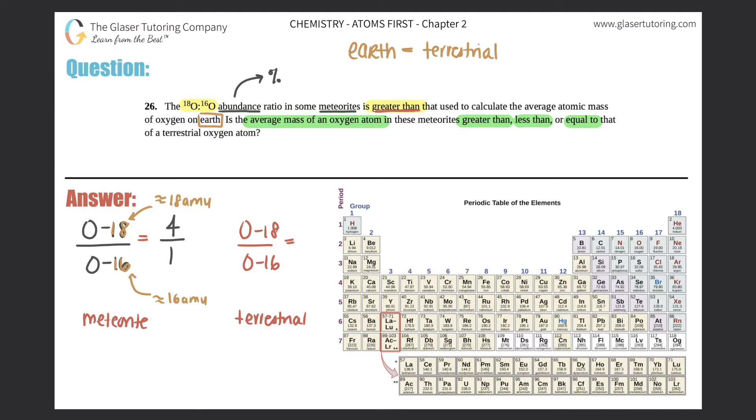Now here for the O-18 and the O-16 for terrestrial, for the Earth, it's much less. So let's just flip it. Instead of saying four over one, let's just say one over four. And this would tell me that I have four times the amount of oxygen-16, as opposed to oxygen-18, which has just the one right next to it.